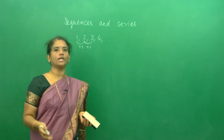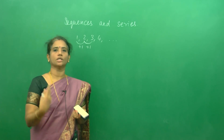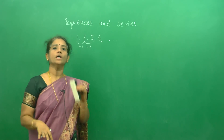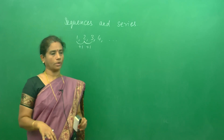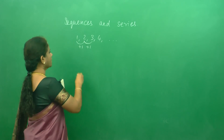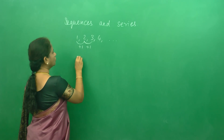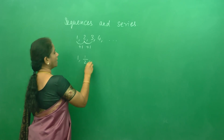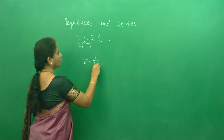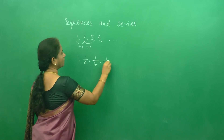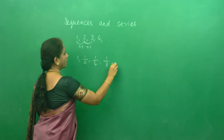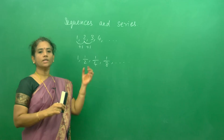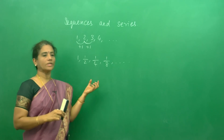The rule can be addition, subtraction, multiplication, or division — any rule it can follow. It is a sequence. For example, if you consider 1, 1/2, 1/4, 1/8, etc., even this is a sequence.